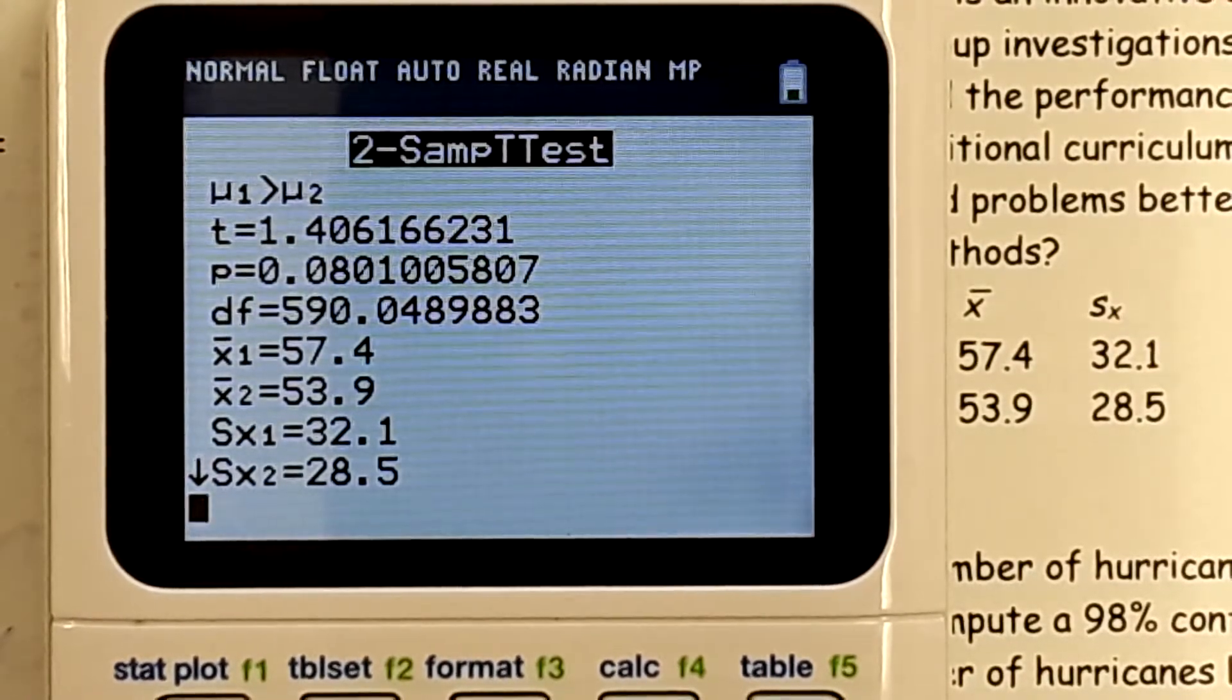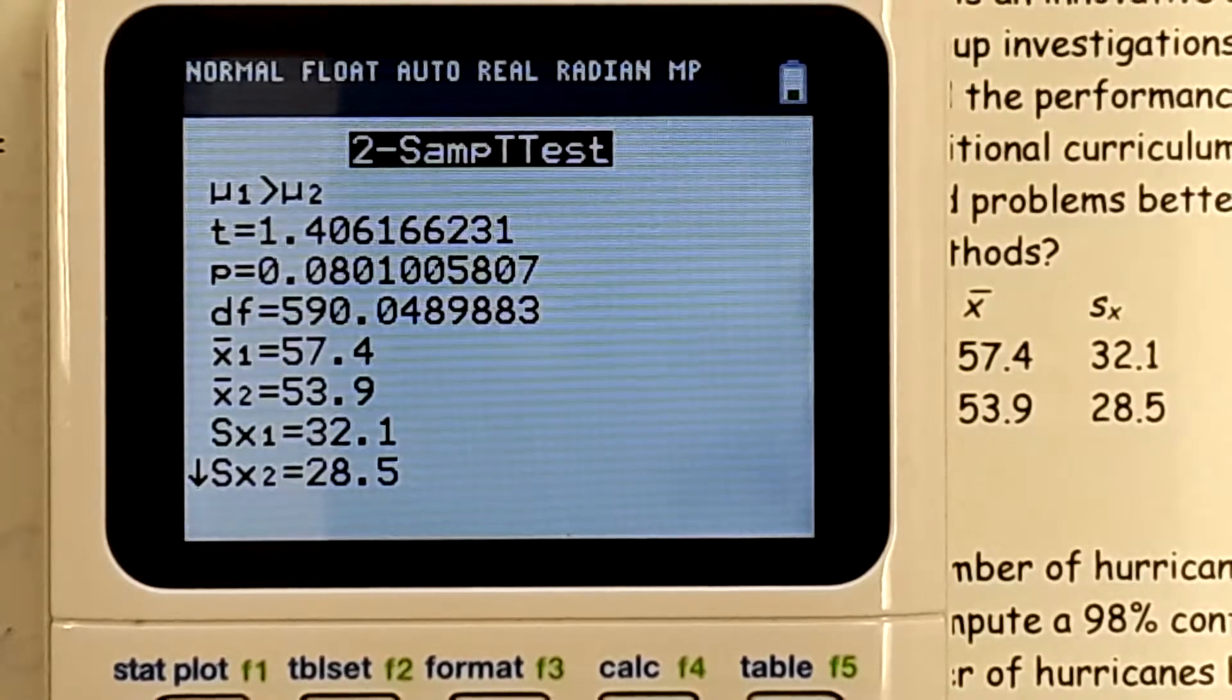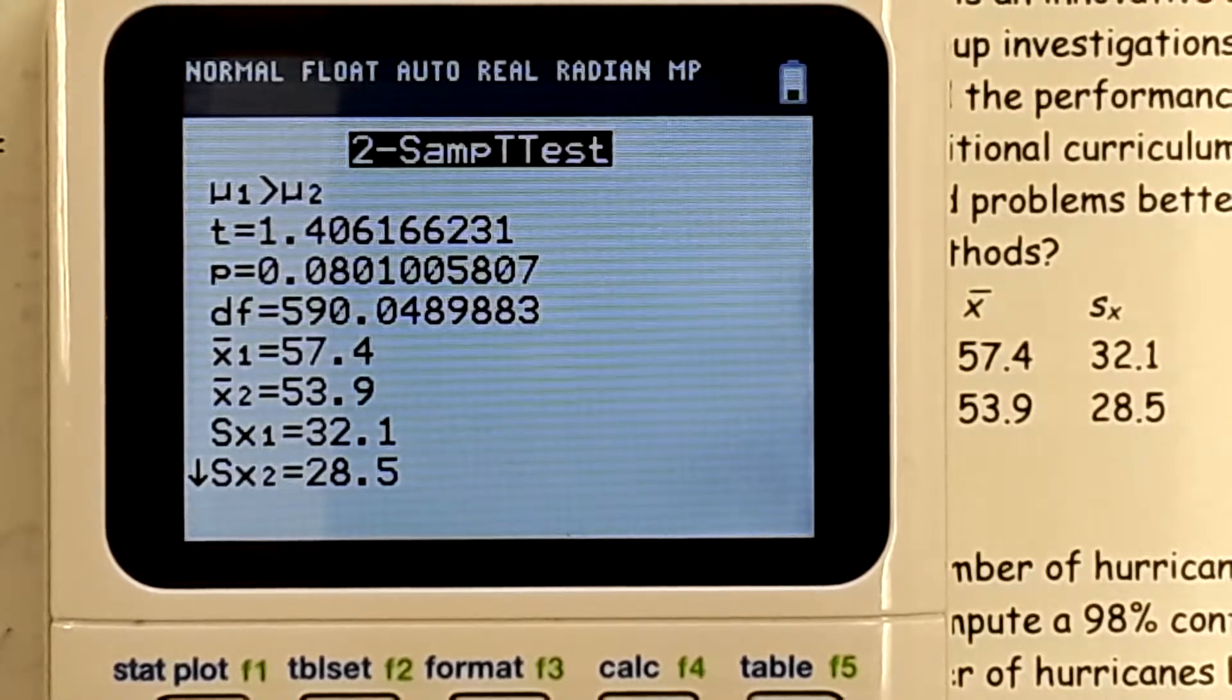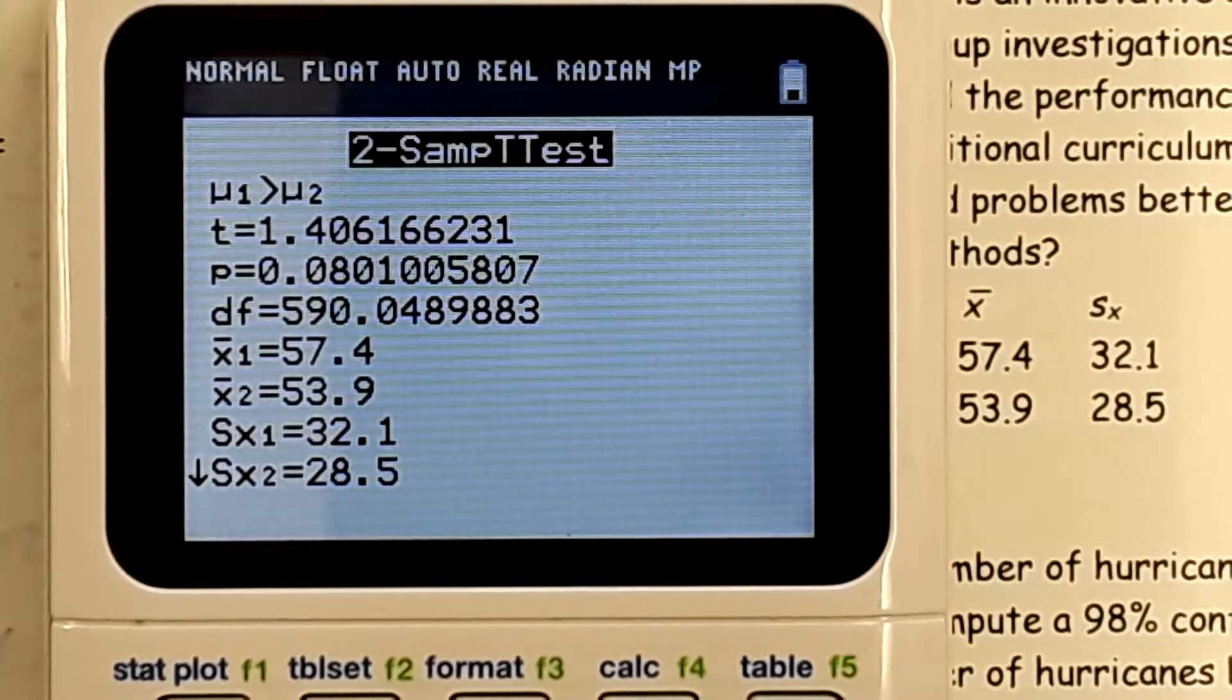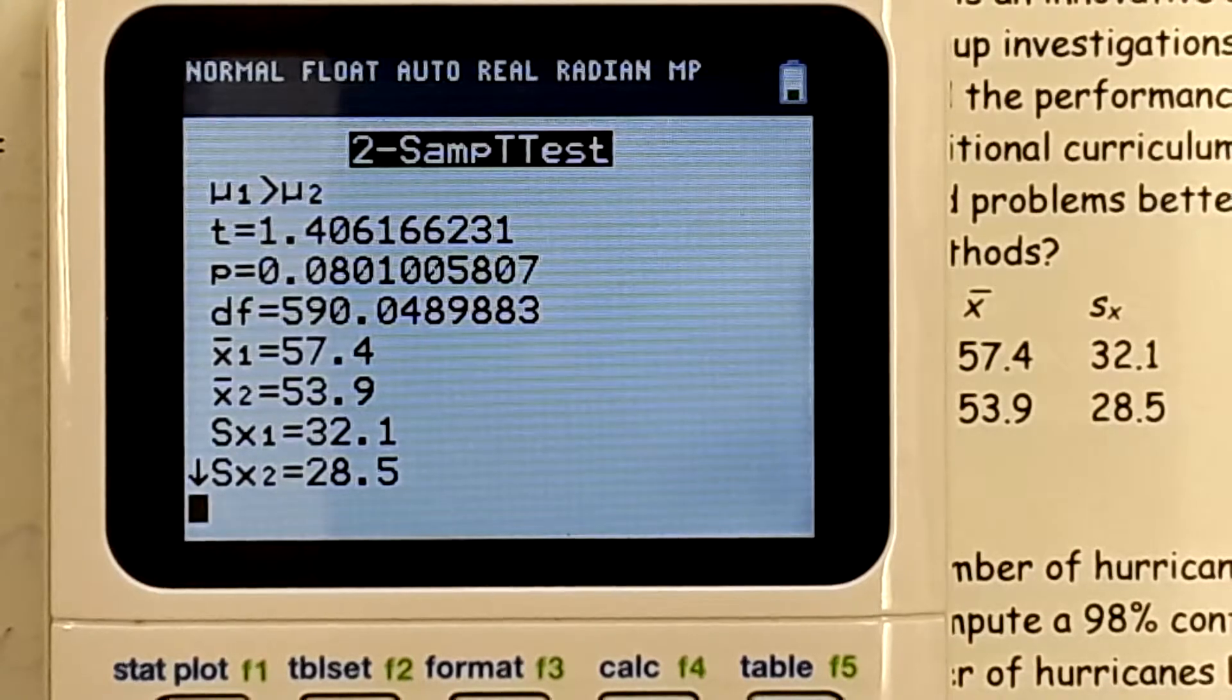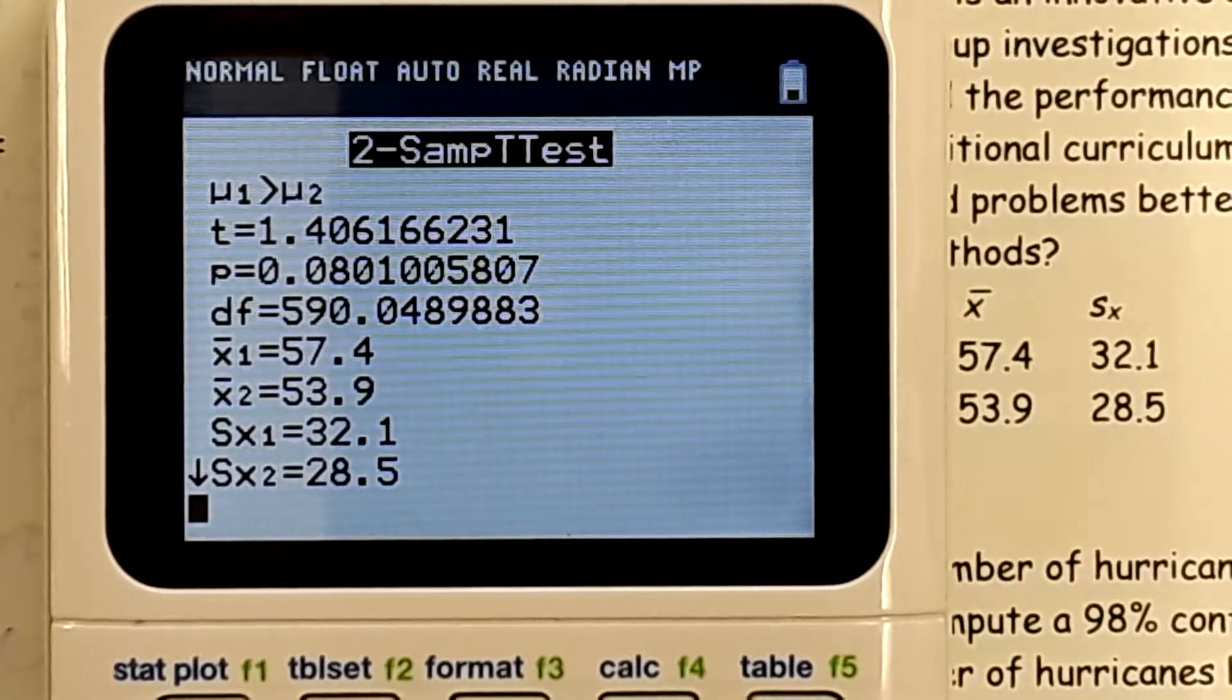What two things are important here? The test statistic and the p-value. Our test statistic and our p-value. So if we look at our p-value compared to our alpha level, what would we say? Fail to reject. We would fail to reject because our p-value is 0.408 and our alpha level was 0.05.